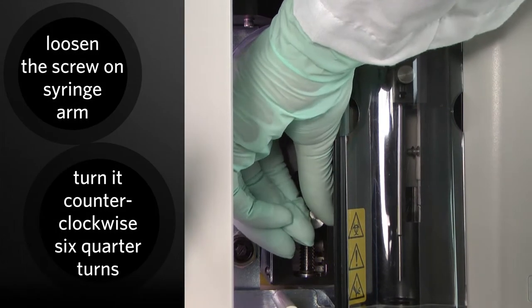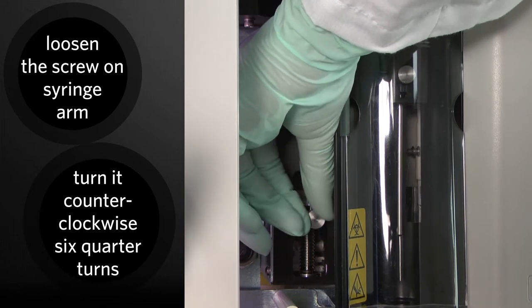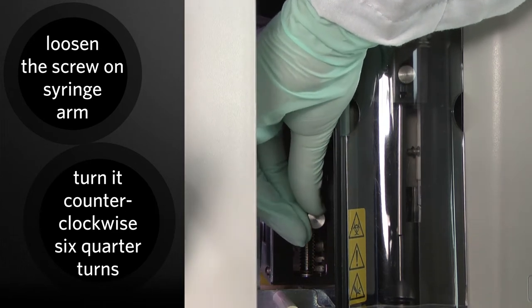At the base of the syringe, loosen the thumb screw by turning it counter-clockwise six quarter turns.